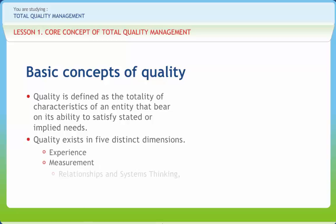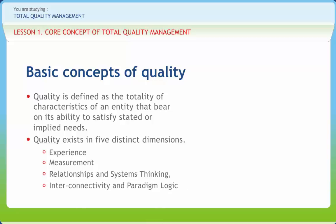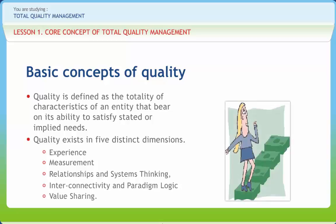Quality exists in five distinct dimensions, made up of experience, measurement, relationships and systems thinking, interconnectivity, and paradigm logic and value sharing. The dimensions of quality that can be explicitly defined include performance, features, conformance, and serviceability.